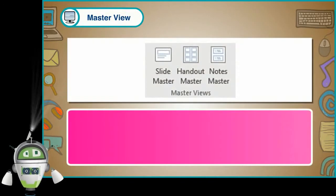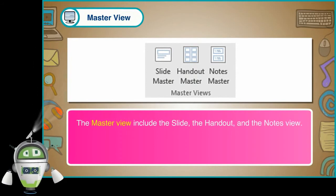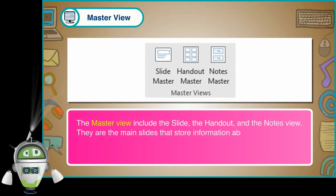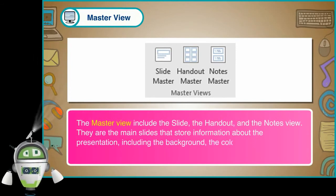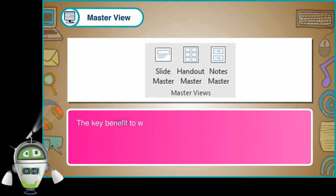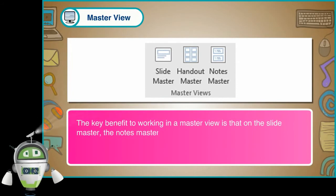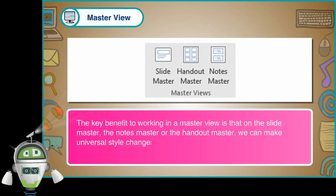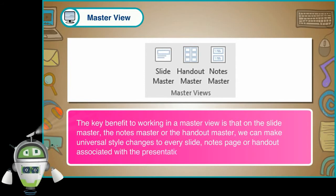Master View: The master view includes the Slide, Handout and Notes view. They are the main slides that store information about the presentation including the background, color, fonts, effects, placeholder sizes and positions. The key benefit of working in a master view is that on the slide master, notes master or handout master, we can make universal style changes to every slide, notes page or handout associated with the presentation.